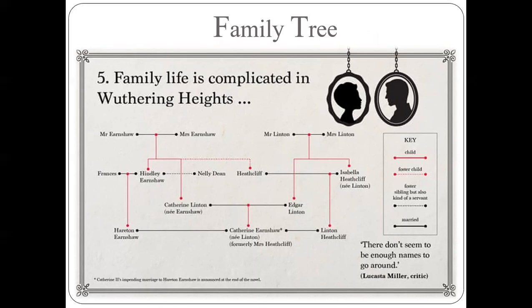There is a family tree here. If you can look at it minutely — I know the writing may be a little illegible — the entire family tree is charted out. Please go through the family tree. The pink line represents a child, the pink dotted line is a foster child, and the black dotted line is a foster child who is treated as a servant. The black line is the marriage line. So, Mr. Earnshaw connected by a black line to Mrs. Earnshaw means they are married; pink lines to Hindley and Catherine means they are their children. Hindley and Nellie Dean connected by a black dotted line means foster siblings, but she is a servant. Please study this — it will help you.